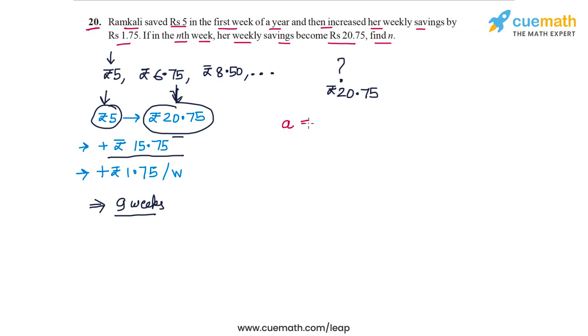So we have the first term A is equal to 5. The common difference is the increase in weekly savings every week which is 1.75, and the last term is 20.75, so TN is 20.75. And now let's apply the relationship for TN in terms of A and D. So TN is A plus N minus 1 times D.